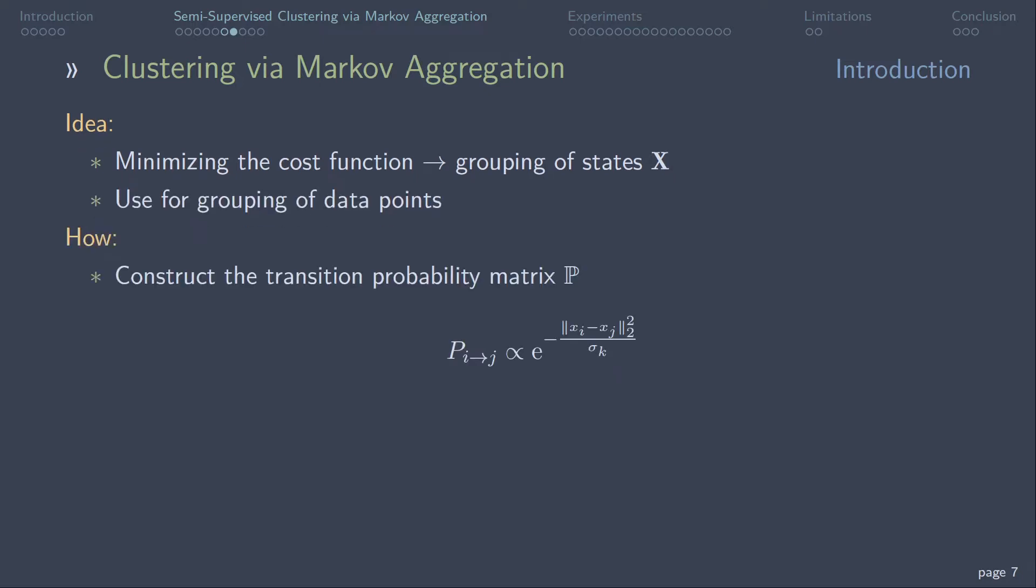By first constructing the probability matrix P, where Xi, Xj are the coordinates of the i-th and j-th data points. Then we take the squared Euclidean distance between them, scaled by sigma k. In this work, sigma k was chosen as the k nearest neighbor distance. So we see that the algorithm has two hyperparameters that can be tuned, beta and k.